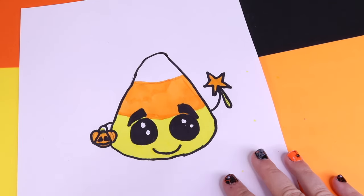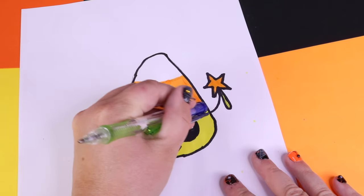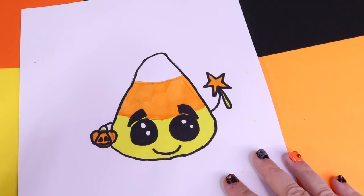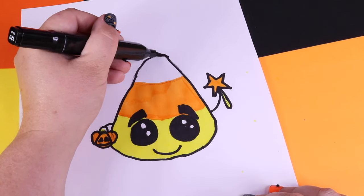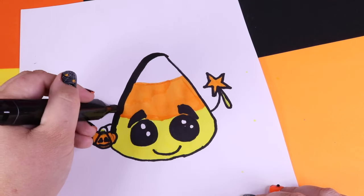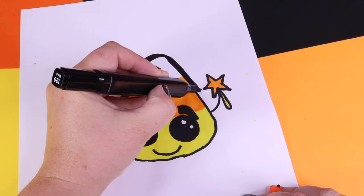That is it, the cutest candy corn. Let's erase some of our pencil marks now so that we don't see them where we don't want them. And take our black marker one last time and go over the side of our candy corn to give him a solid black line on the outside.